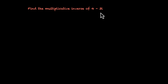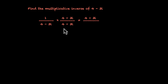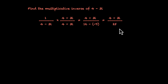Let's find the multiplicative inverse of 4−3i. The multiplicative inverse is its reciprocal: 1/(4−3i). To write this in standard form, we rationalize the denominator by multiplying by (4+3i)/(4+3i). The numerator becomes 4+3i. The denominator is (4)²−(3i)²=16−(−9)=25. So the multiplicative inverse is (4+3i)/25, meaning its real part is 4/25 and imaginary part is 3/25.